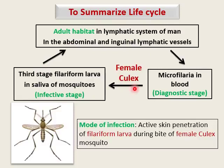The mode of infection is active skin penetration of the filariform larva during the bite of the female Culex mosquito. Active penetration means the microfilaria is dropped on the skin and uses its motility to enter through the puncture wound made by the mosquito.